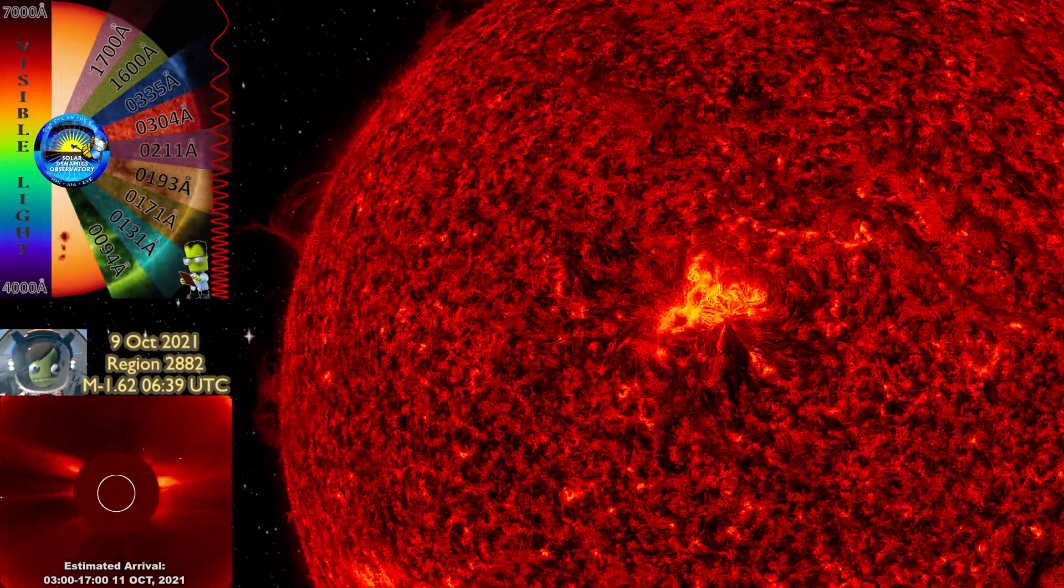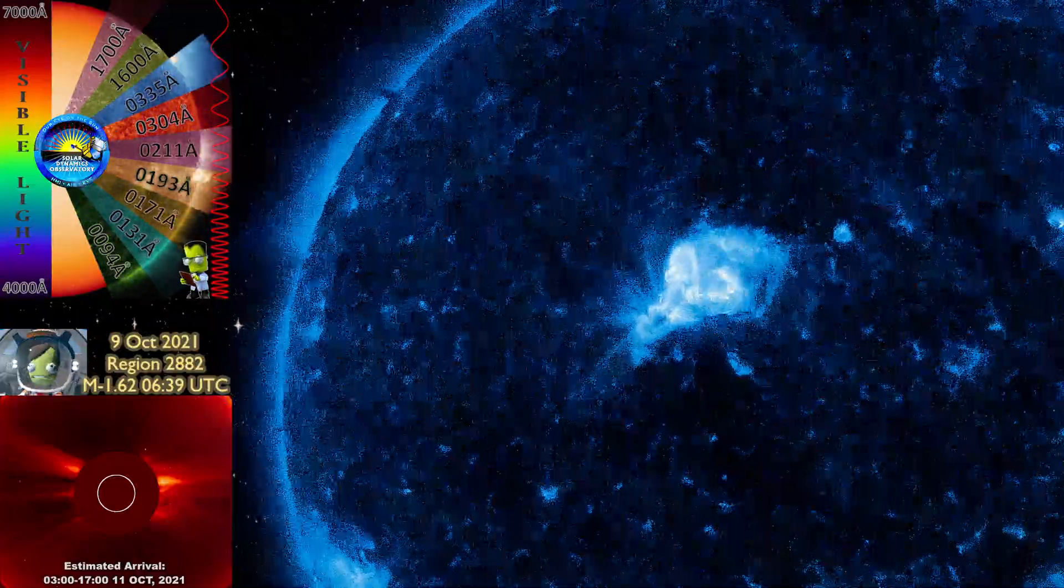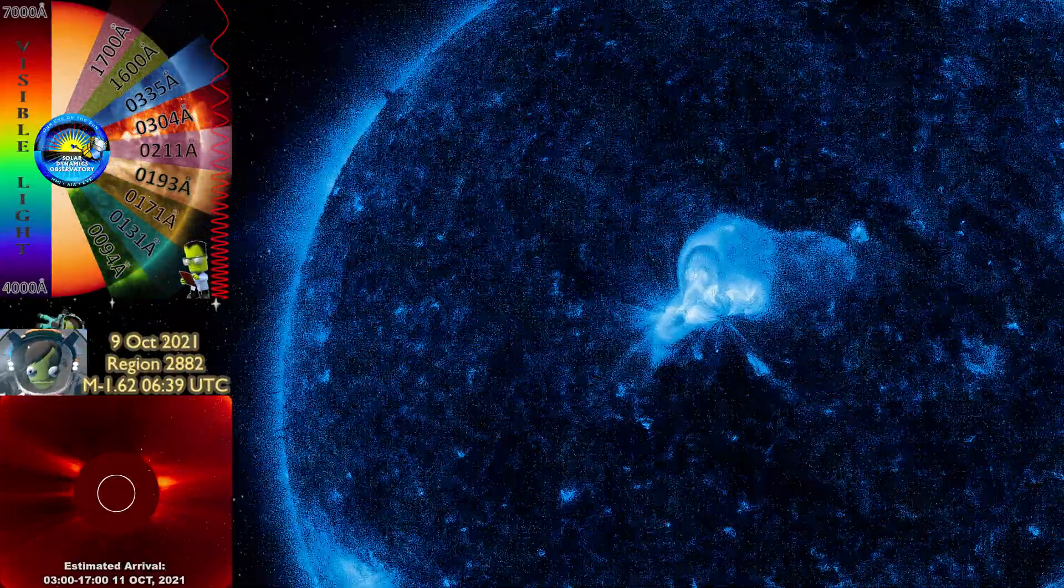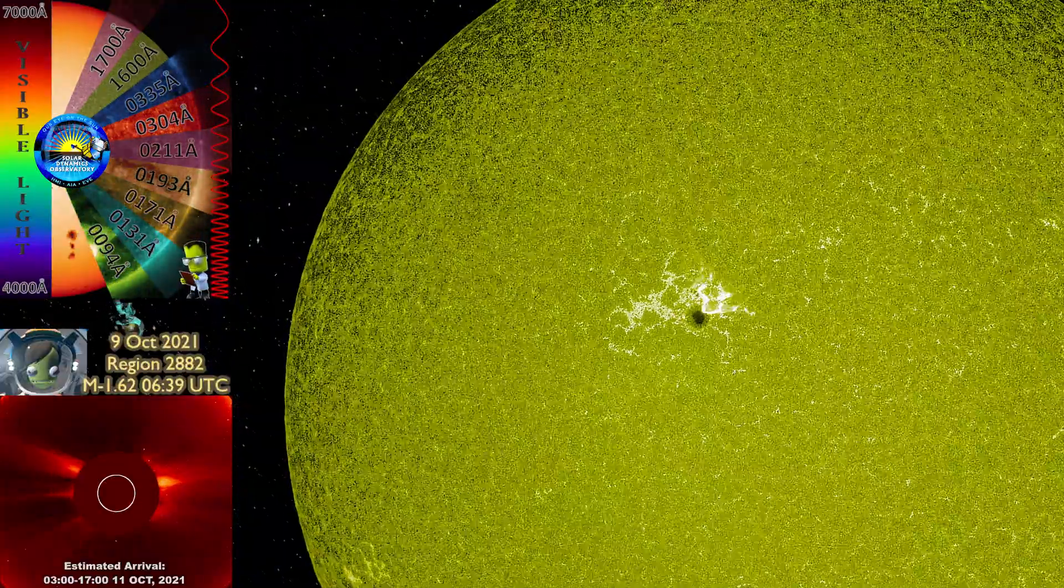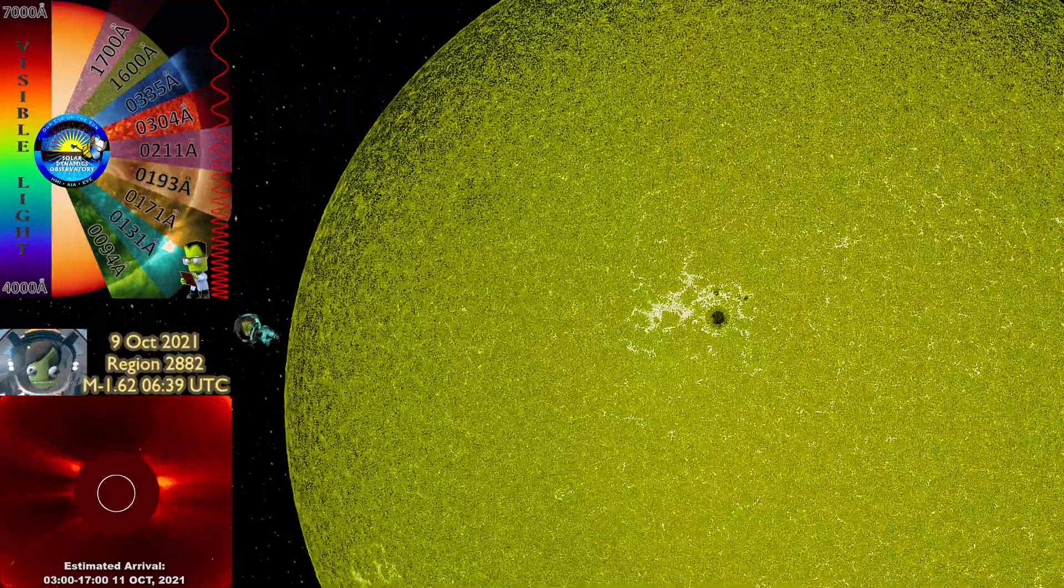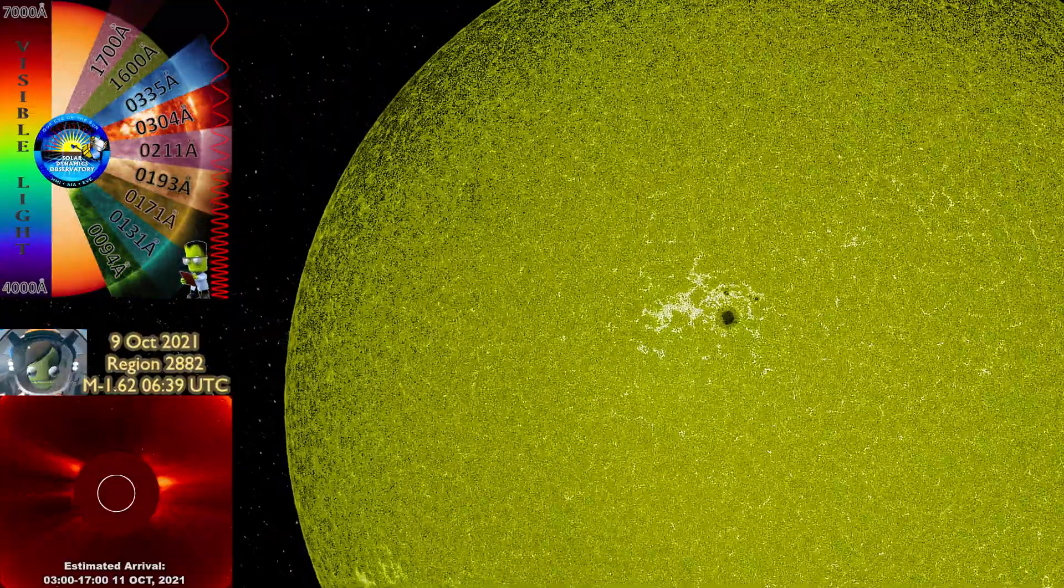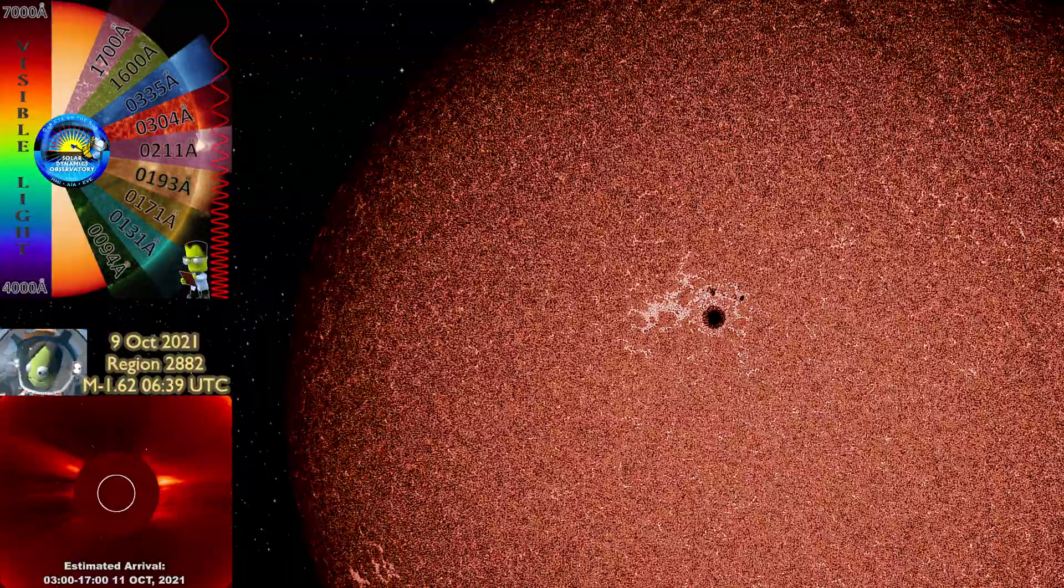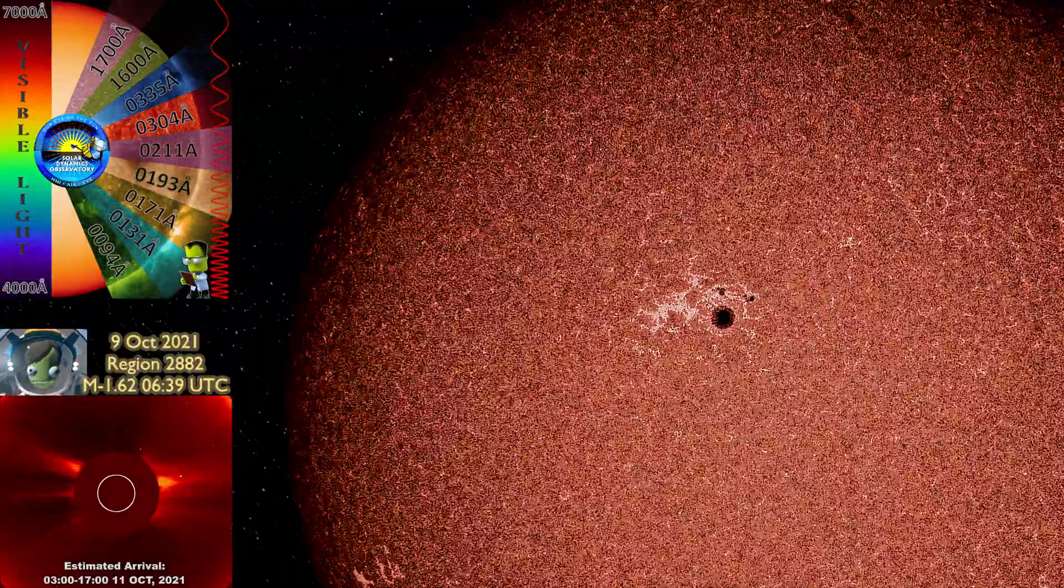Category G2 could lead to potential impacts of areas poleward of 55 degrees geomagnetic latitude: induced currents, power grid fluctuations. High latitude power systems may experience voltage alarms. Spacecraft satellite orientation irregularities may occur.